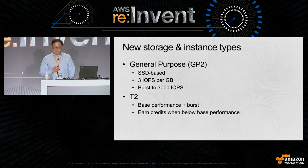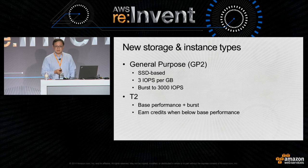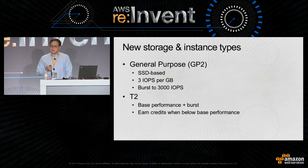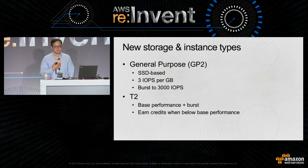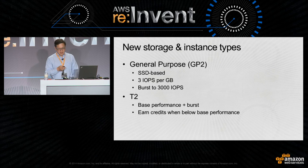For T2 instance types, they have a great base performance and the ability to burst up to 100% CPU utilization. You earn credits when your workload is below the base performance, and you can accumulate these credits — they are available to you for about 24 hours.